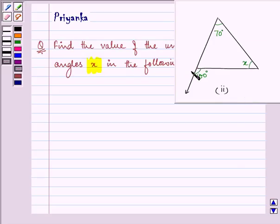We are given the exterior angle as 100 degrees and one of the interior opposite angles as 70 degrees. We need to find the other interior opposite angle. Now, let's start with the solution.